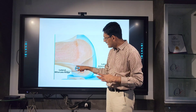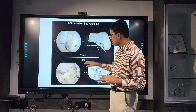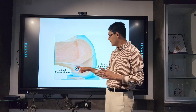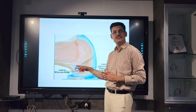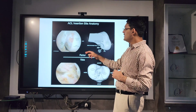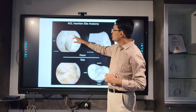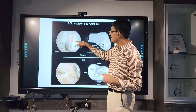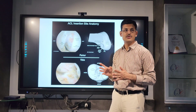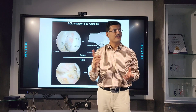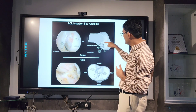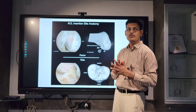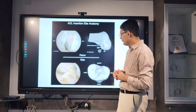Anything posterior to the resident ridge is fine. You can place the tunnel in the AM or PL bundle position, but not anterior to the resident ridge. Ideally the location should cover both the anteromedial and posterolateral bundle. There is a bifurcate ridge in between separating the AM insertion. There is a large bare area anterior to the ACL insertion — the most common mistake is making the tunnel in this bare area, which is a non-anatomical position. A non-anatomical tunnel will not function correctly.